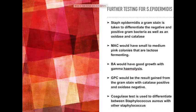Staphylococcus epidermidis from the wound may have spread into the bloodstream. Since it has been isolated from the blood culture and was present in the wound, to test for Staphylococcus epidermidis, a gram stain is taken to differentiate gram-negative and gram-positive bacteria, as well as oxidase and catalase tests. Plating on MacConkey and horse blood agar would be necessary. MacConkey would show small to medium pink colonies that are lactose-fermenting, and the horse blood agar would have good growth with gamma haemolysis.